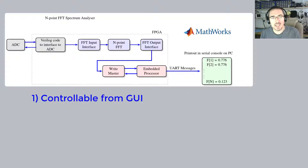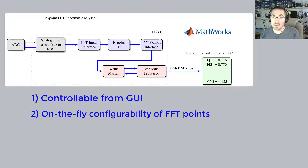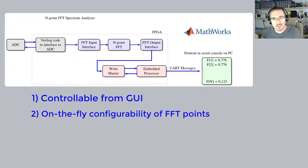Secondly, I would like the number of FFT points to be configurable in real time. So if the user wants, let's say, 8096 points, they can select it from the MATLAB graphical user interface — press a button on the screen maybe — and then it will update on the fly within the FPGA.